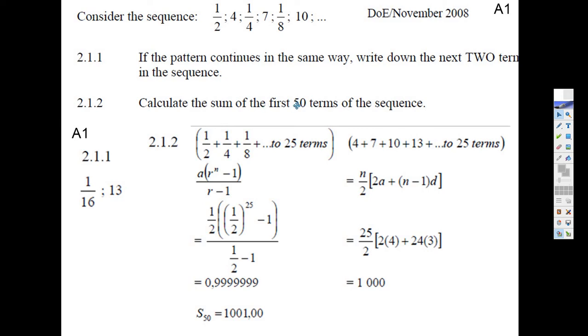Well, calculate the sum of the first 50 terms. Well, half of them are geometric, half of them are arithmetic. Let's look at the geometric sequence first: 1/2 plus 1/4 plus 1/8 to 25 terms, half of the 50 terms.